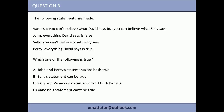Question three is similar — a few statements, some true, some false — and the same technique applies. Imagining option A is correct means both John's and Percy's statements are true. But John says David tells the truth while Percy says David tells lies — they're complete opposites, so option A is obviously wrong. A good lesson: even if you can't get to the answer, you can often rule out one or two options that are clearly contradictory. The more options you cut, the better your odds.